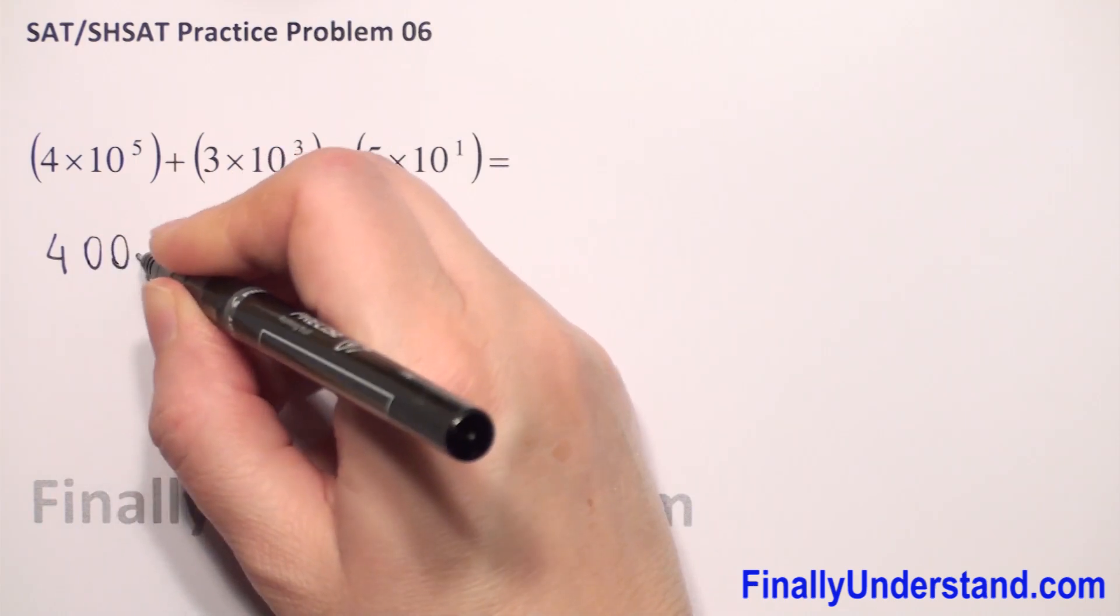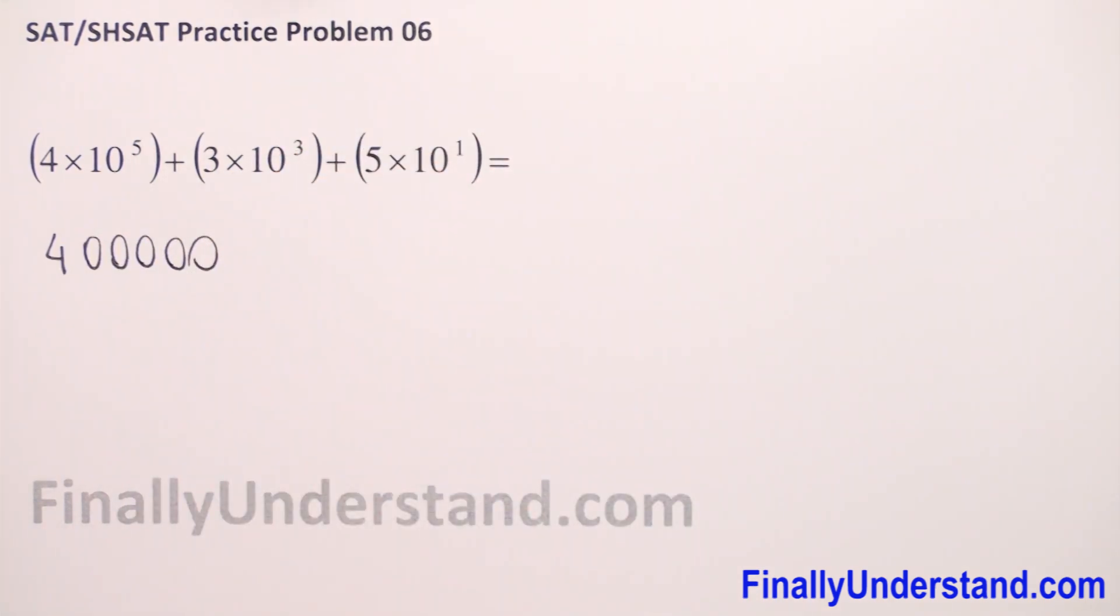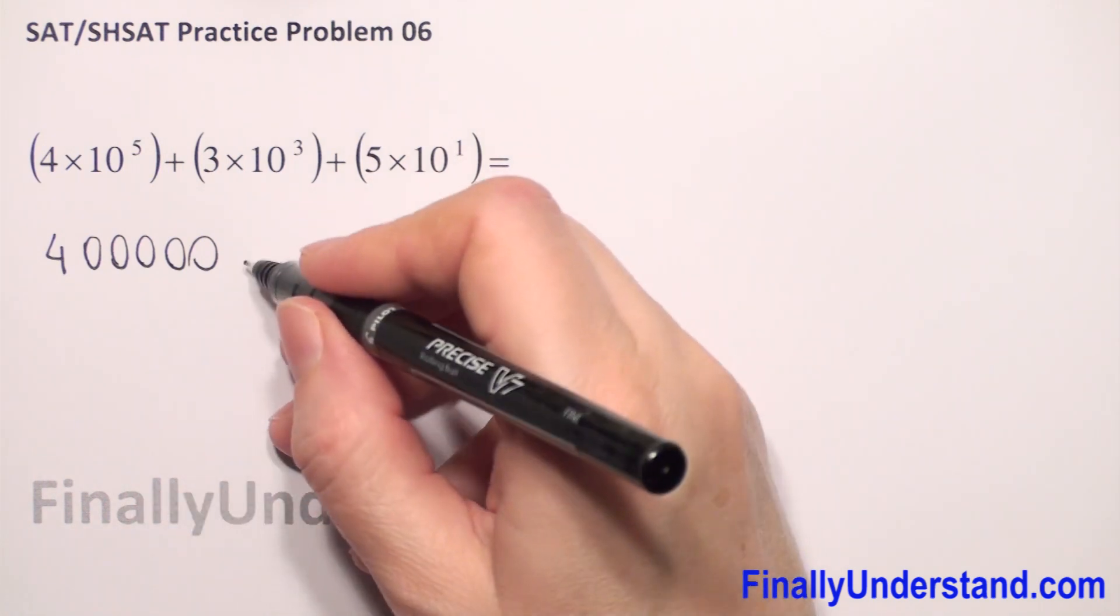So we have 1, 2, 3, 4, 5 zeros. And we have plus.